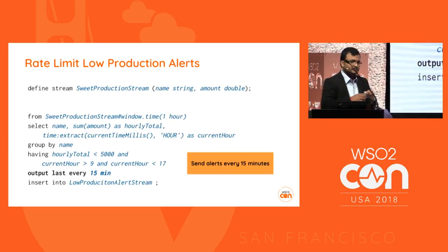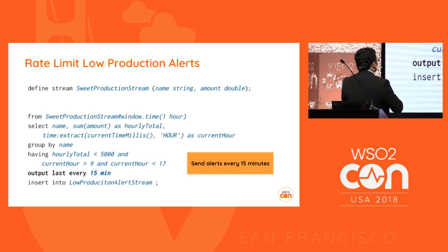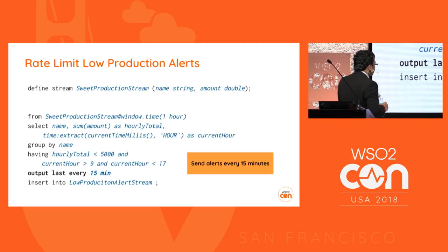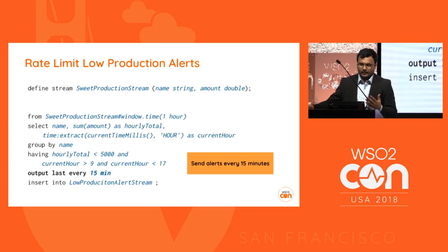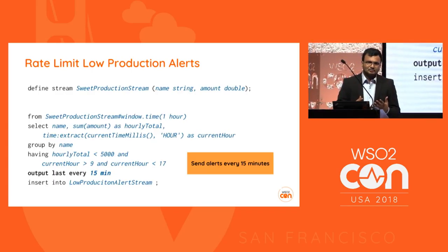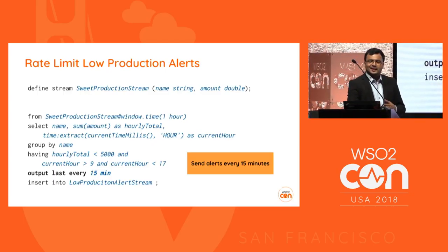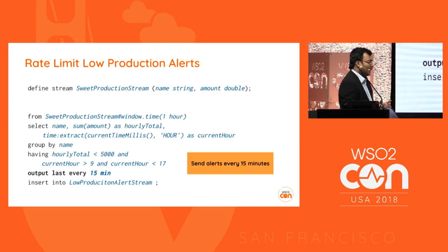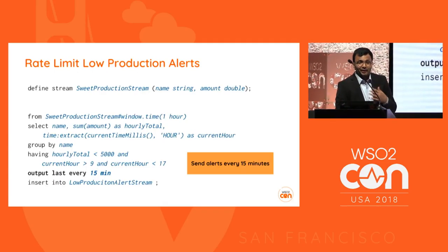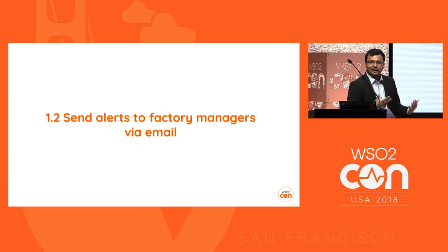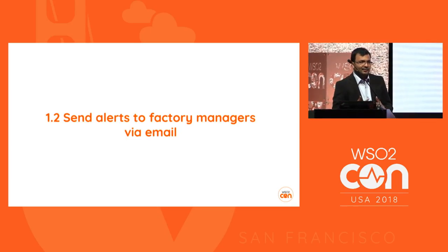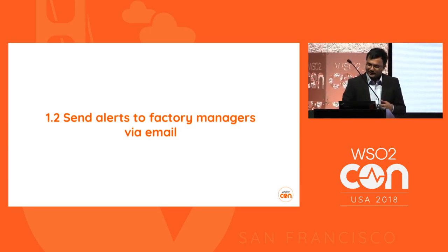Now we've identified the low production events and separated them into a low production stream. Phase two is to notify the manager - send alerts to factory managers via email. For that, we attach an email sink to the low production alert stream.